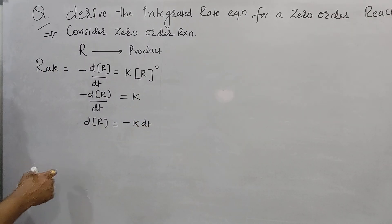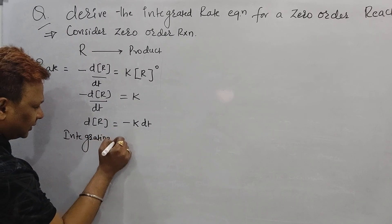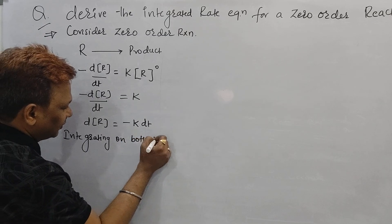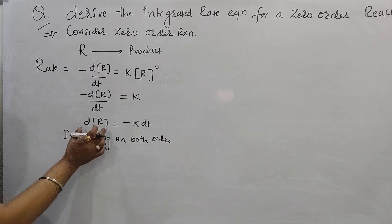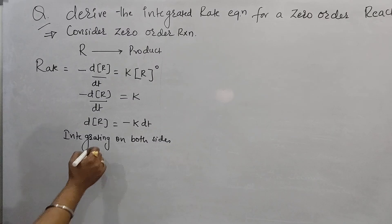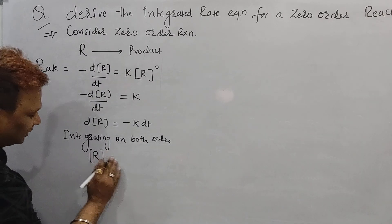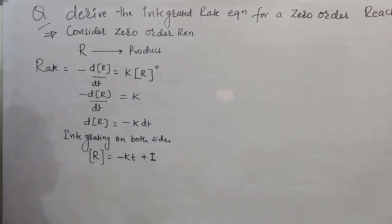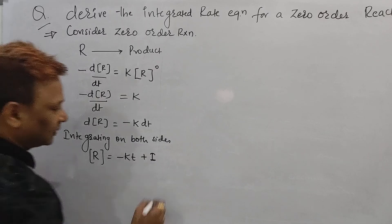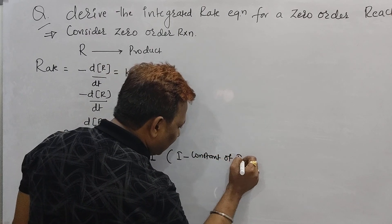We can write this as d[R] = minus K·dt. Now we have to integrate on both sides. Integrating both sides, d[R] becomes concentration of R, and minus K·dt integrated gives minus K·T plus I, where I is called the constant of integration.